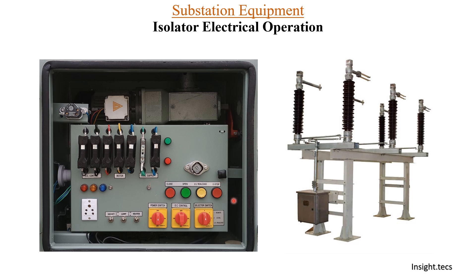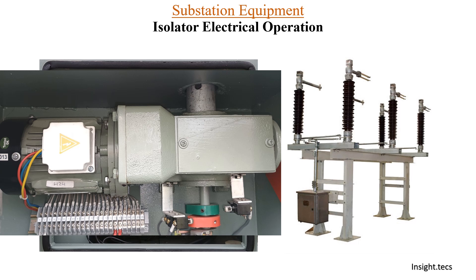The control panel consists of push buttons, a power switch that is on/off, a DC control on/off switch, and a selector switch to choose between remote mode and local mode. There is also a fuse circuit for DC control, a switch for the AC motor, and AC supply fuses. LEDs and a heater lamp are placed inside the isolator box, and auxiliary supply can be given through a plug. Inside the control box there is a motor and a gear mechanism.